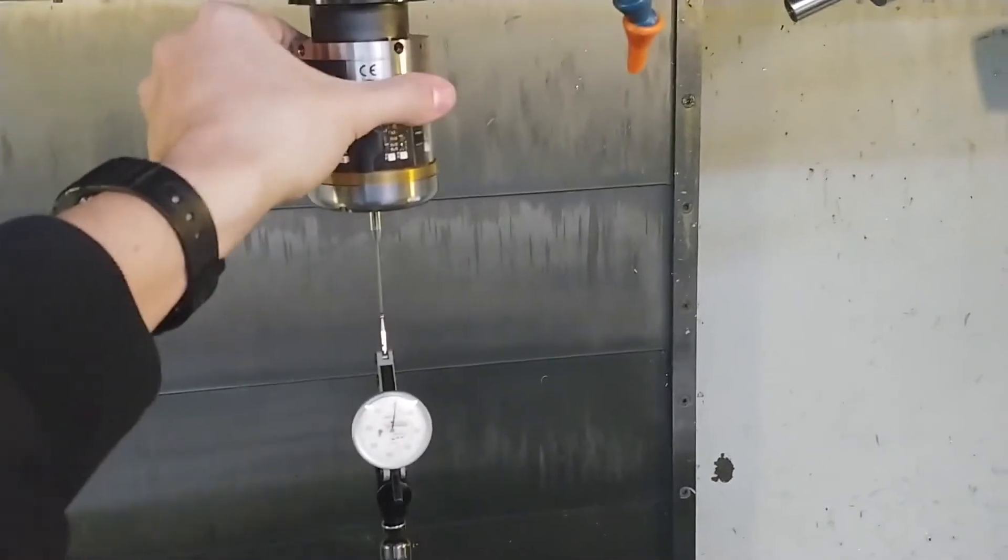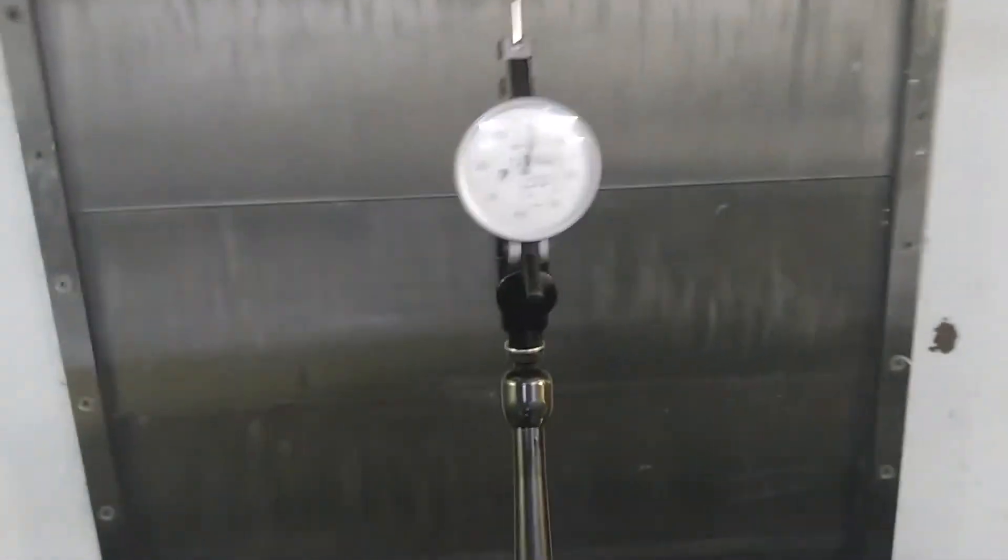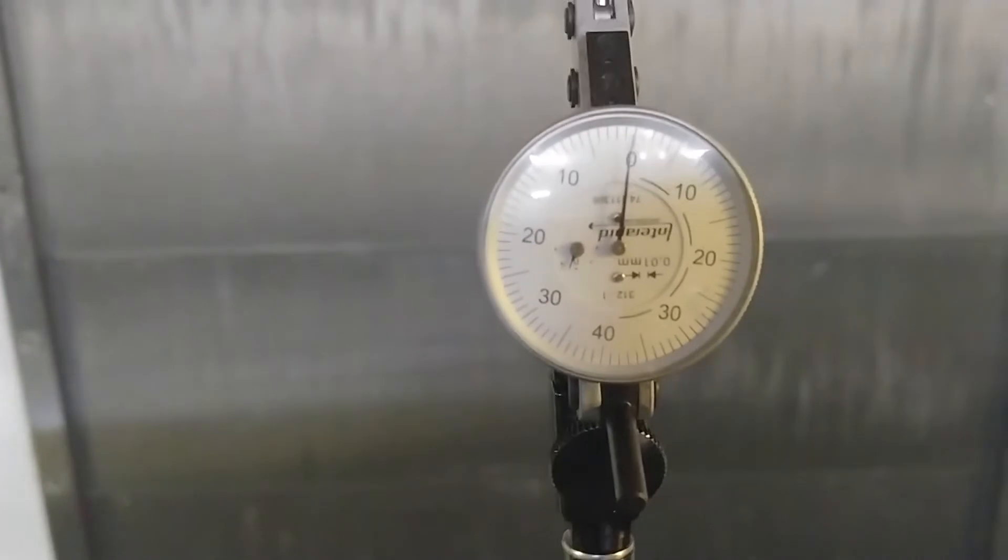With the probe in the spindle, use a test indicator to measure the runout of the probe stylus ball while spinning the probe by hand.